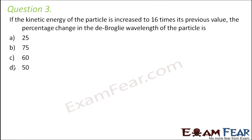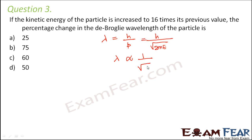Question number 3: If the kinetic energy of the particle is increased to 16 times its previous value, the percentage change in the De Broglie wavelength is? From De Broglie hypothesis, lambda equals h by p, and momentum equals root over 2mE, so lambda is proportional to 1 by root over E. Since h, m, and 2 are all constants for the same particle.